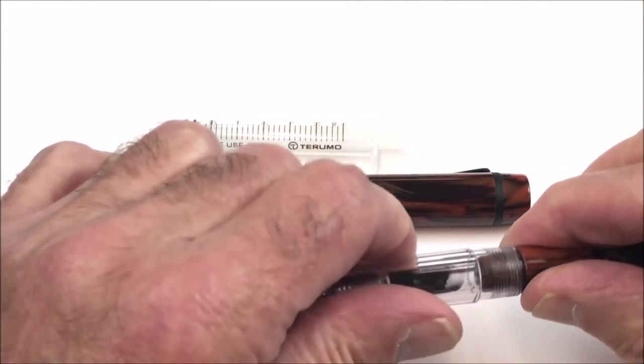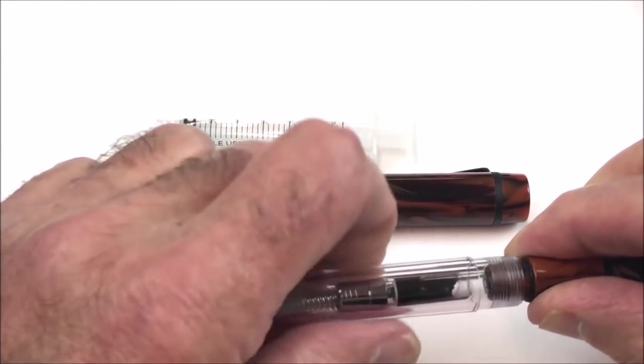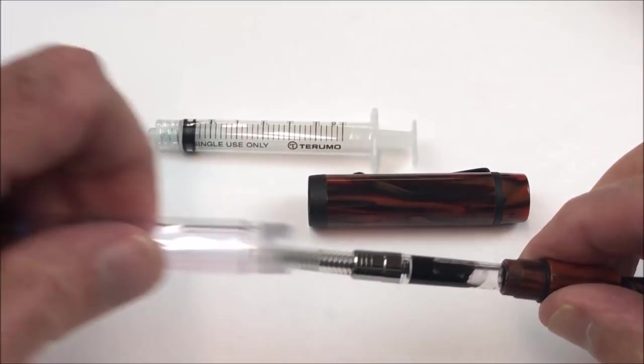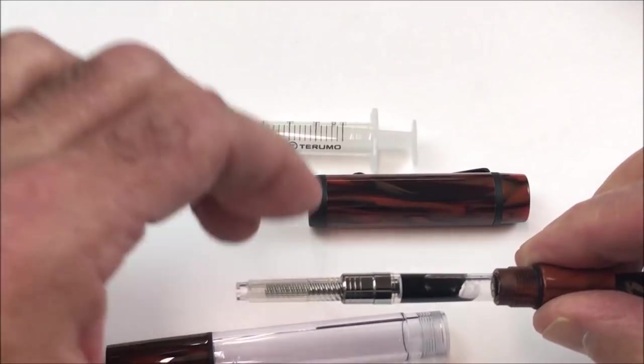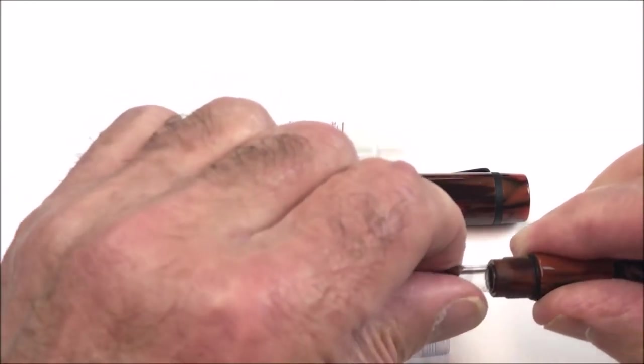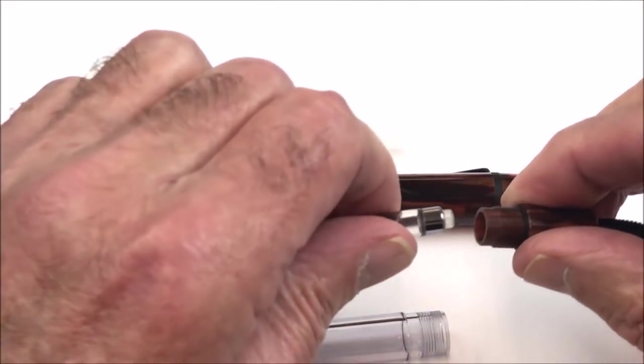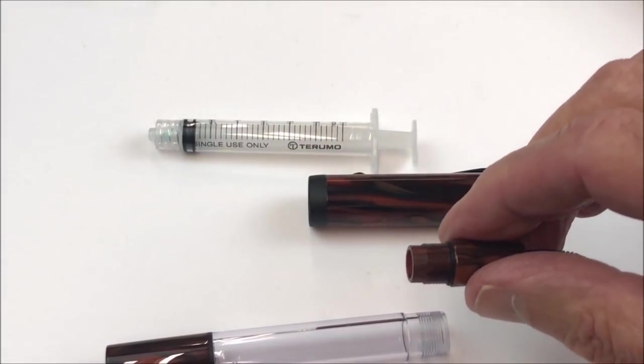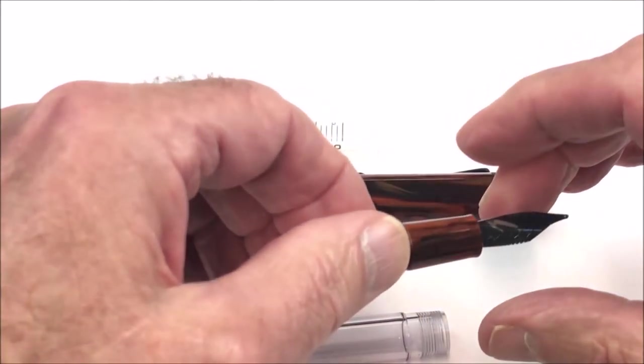Now I also happen to know that it will take a standard cartridge. So it's got a standard cartridge in. I'm going to take that out. It's really difficult to orient yourself when you're working on the far side of the camera. So here's the nib.